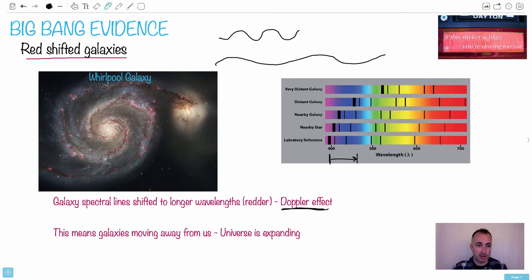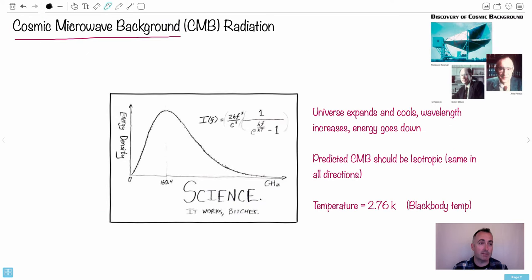So red-shifted galaxies are strong evidence for Big Bang. Even better is this. It's called the Cosmic Microwave Background Radiation, or CMB. So Cosmic Microwave Background Radiation. It was predicted that if there was a Big Bang like this and the universe was expanding, it should cool.